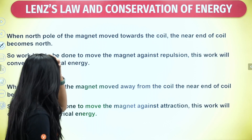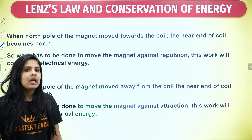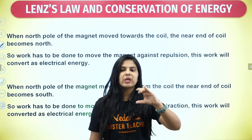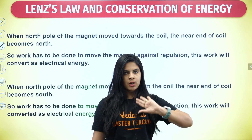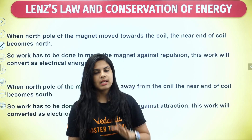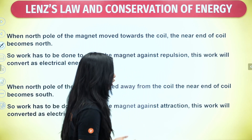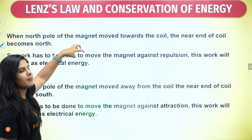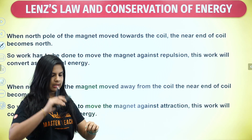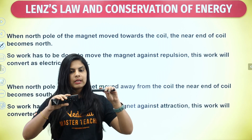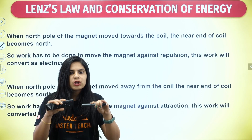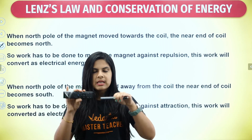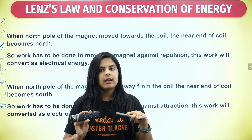Lenz's law and conservation of energy — when current flows in the clockwise direction, that end is the south pole; anti-clockwise is the north pole. When the north pole of the magnet is at the near end of the coil, the near end of the solenoid also becomes north pole.